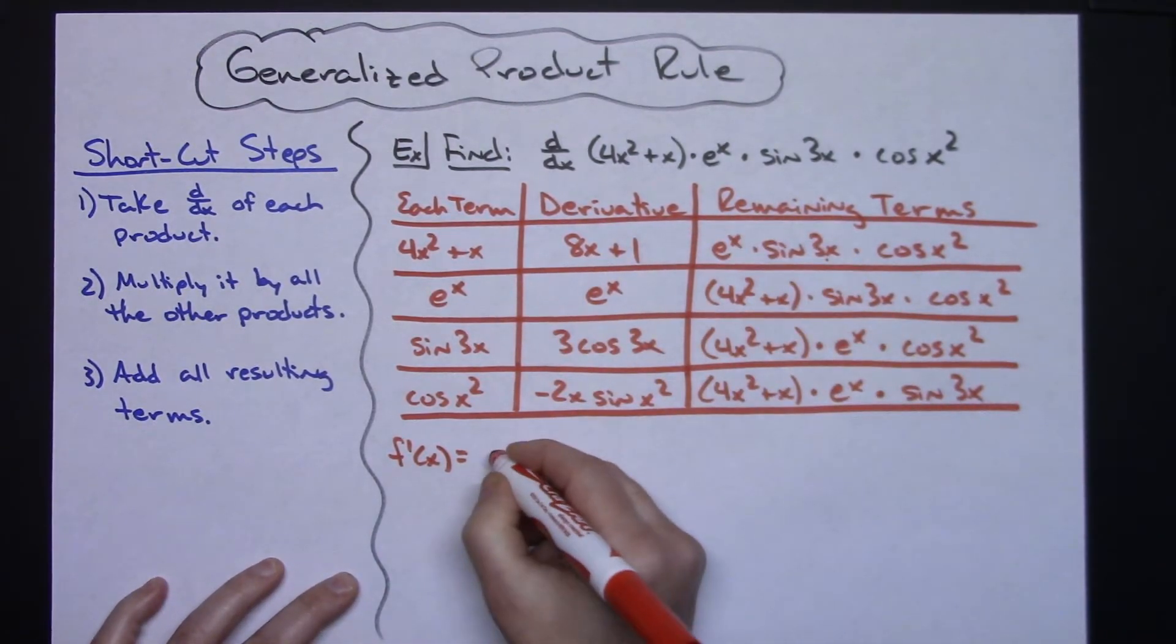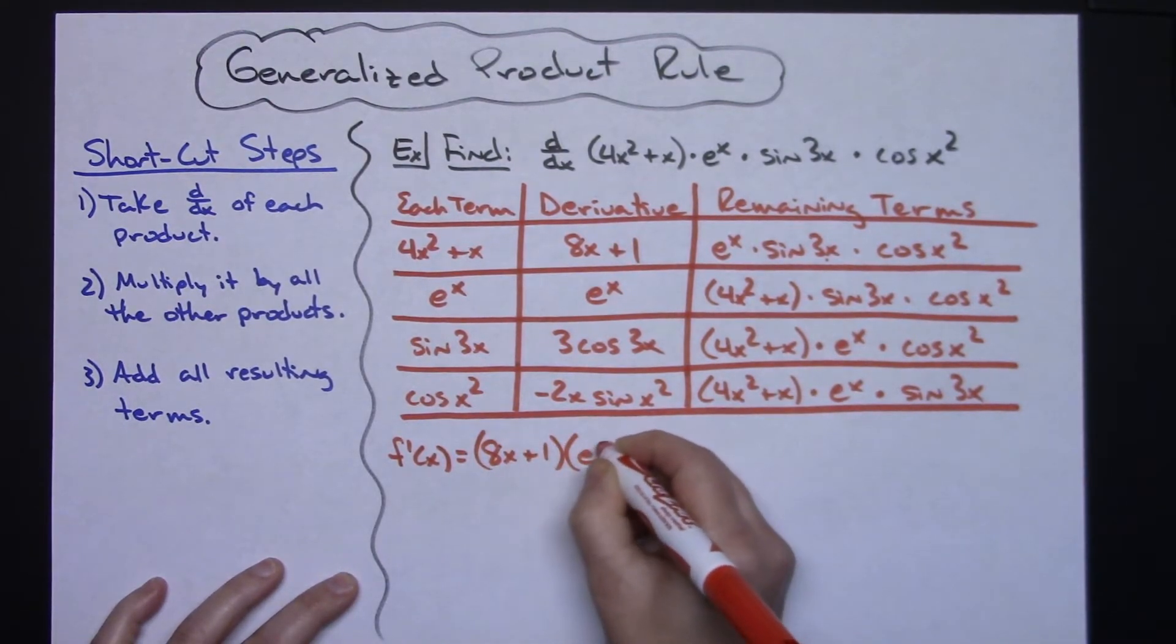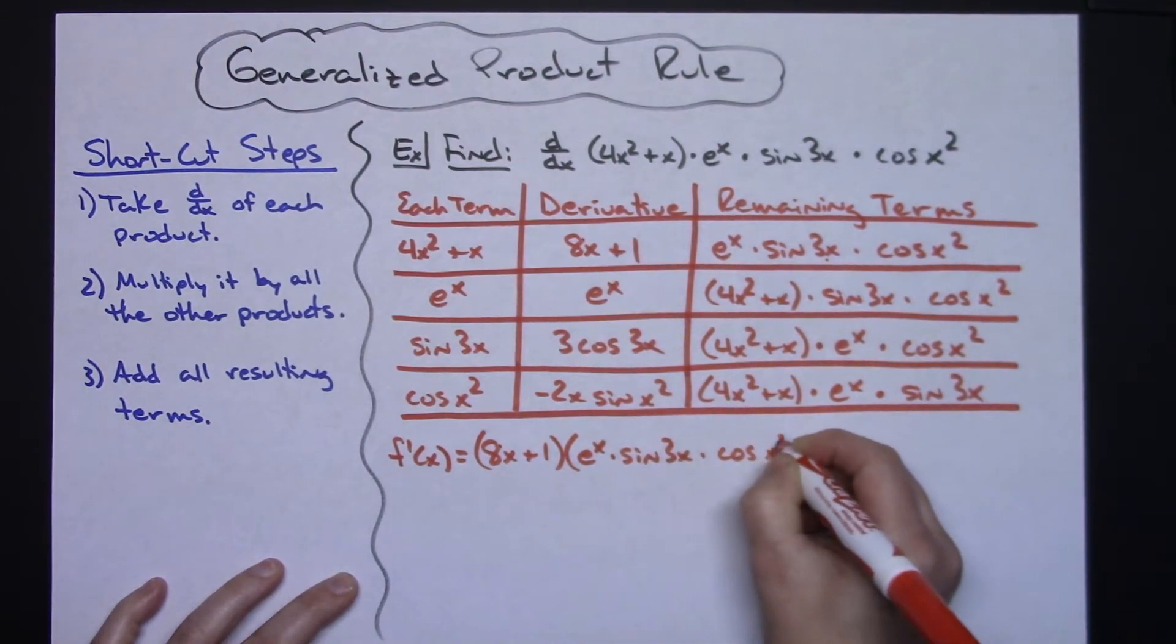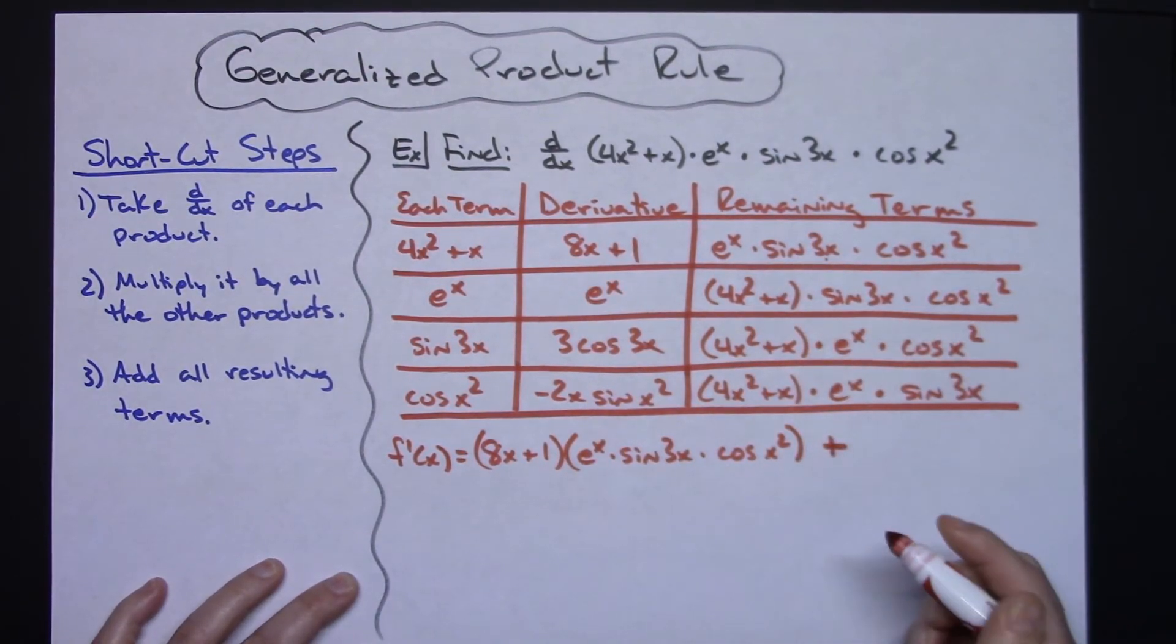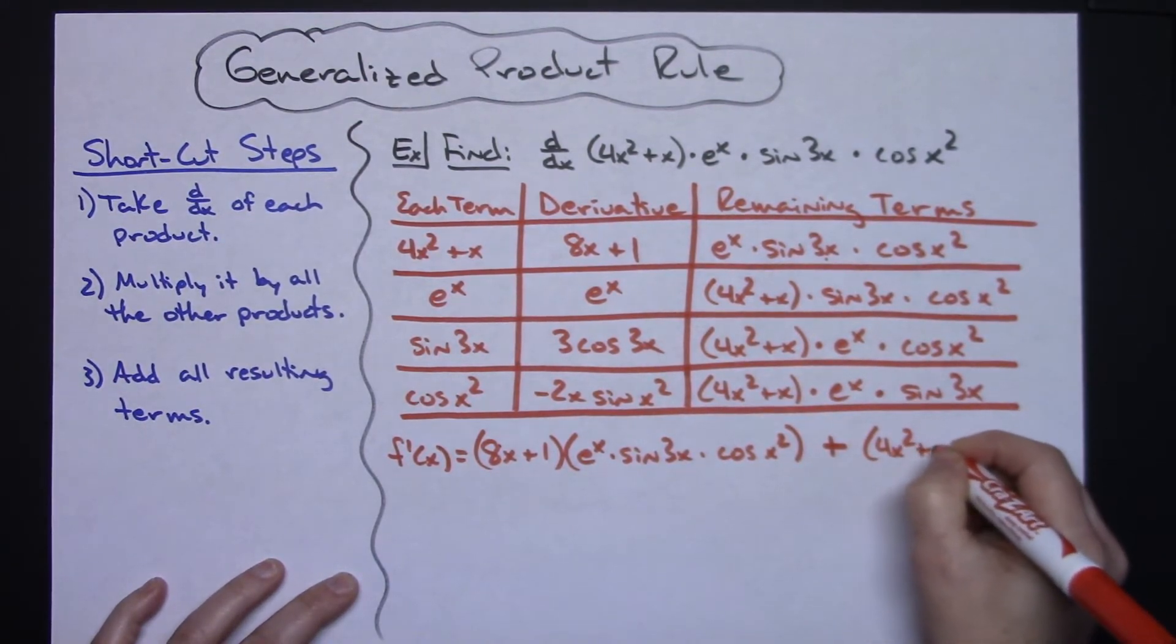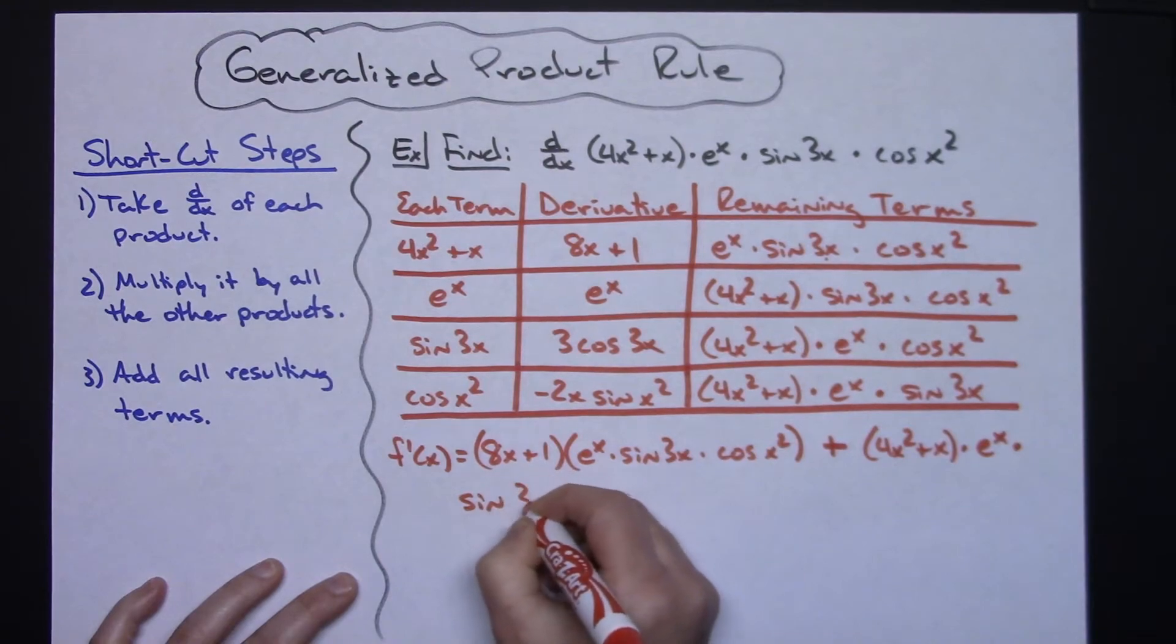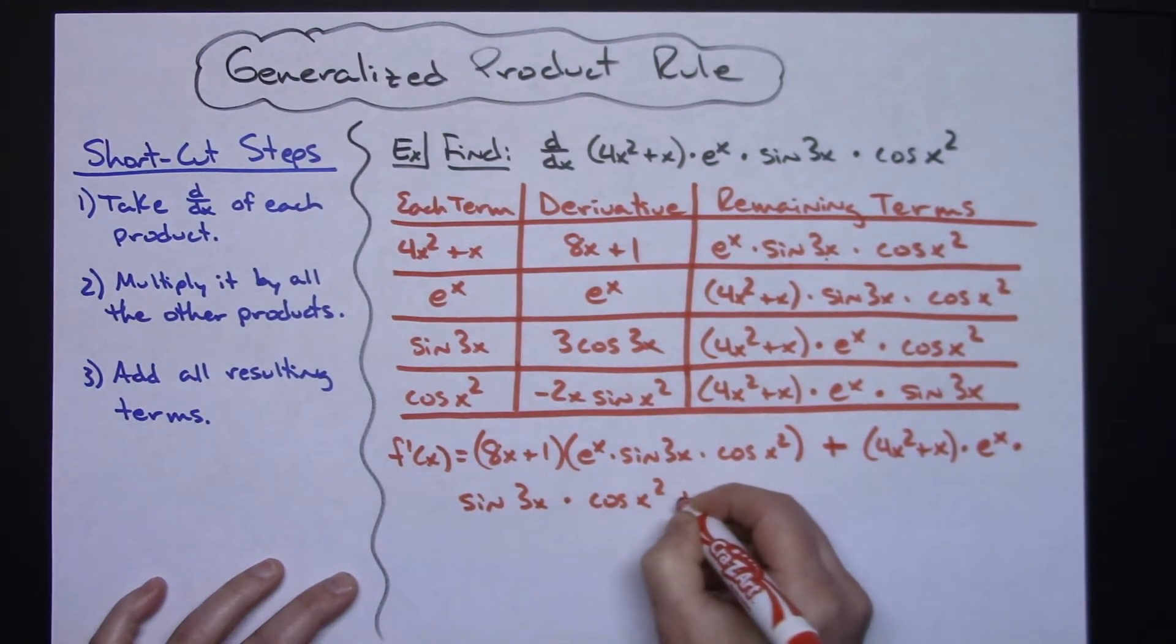But this times this. So 8x plus 1 times that e to the x sine 3x cosine x squared. Plus this times this one. And rearranging just a little bit there, putting that one maybe in front. So 4x squared plus x times e to the x times, I knew I was going to run out of room here, sine 3x times the cosine x squared.